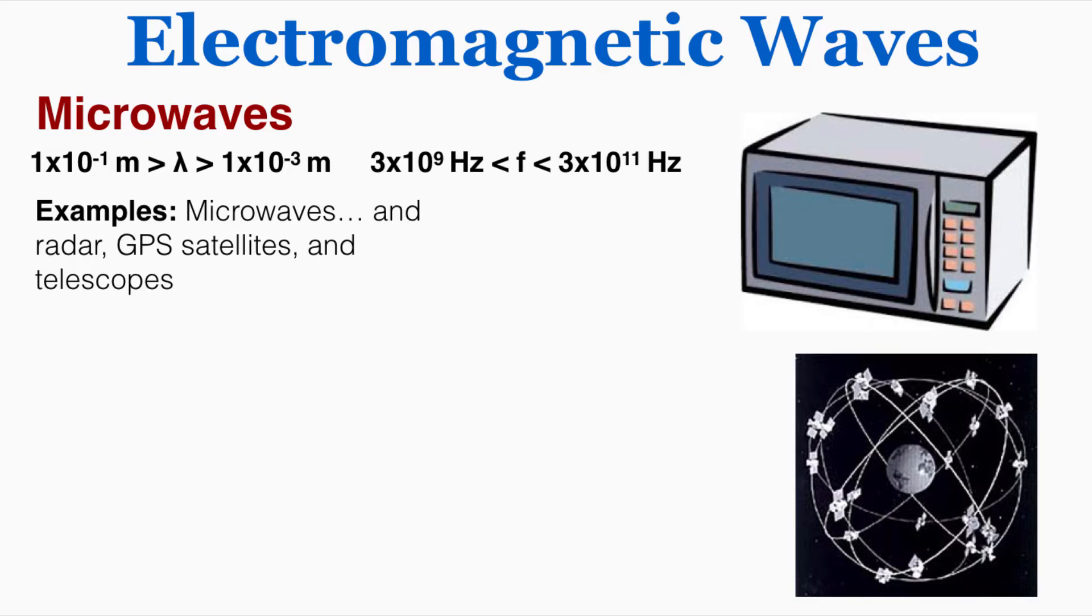Going down the spectrum we come to microwaves. You can see I've listed the range of possible wavelengths and frequencies for a microwave. Examples of microwaves are the waves that exist inside of the machine microwave, and also radar GPS satellites and telescopes.